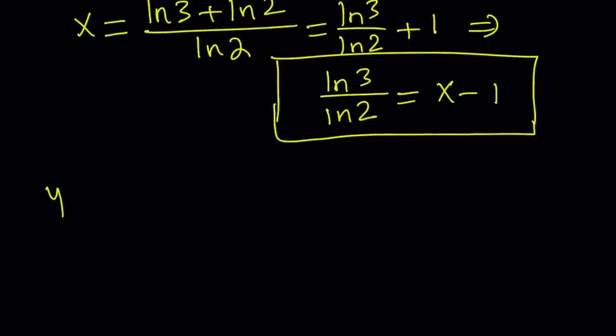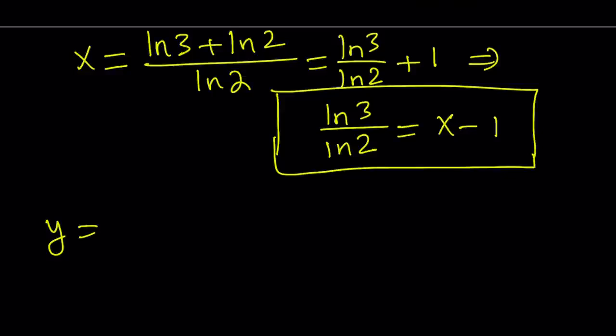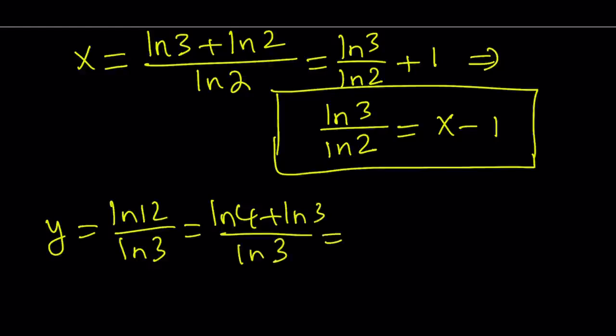Okay, great. So now we know that y is equal to ln 12 over ln 3. And 12 can be written as 4 times 3. Therefore, this is equivalent to ln 4 plus ln 3 divided by ln 3. And this is 2 ln 2 because it's ln 2 squared. So I can write it as 2 ln 2 divided by ln 3 plus ln 3 over ln 3 is equal to 1. So I'm just going to write it as 1.